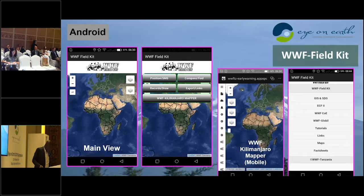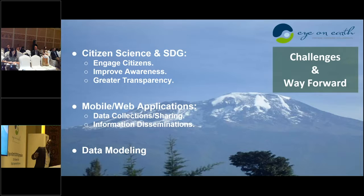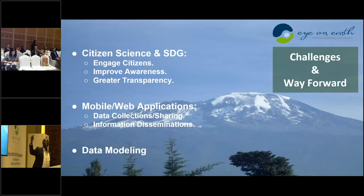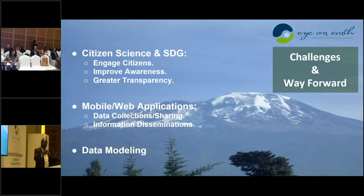A challenge: citizen science and SDG — engaging citizens, improving awareness, and greater transparency. This was addressed by people from EZRI, saying you can do the SDG thing. Right now we are doing water quality and sea observation, and we want to use satellite to support this. There is also mobile and web application data collection and sharing — we want to disseminate information. Most communities collecting data ask how it can be shared back. What you create, you should give back to the society — a simple graph showing the trend is all they want. Lastly, data modeling — looking at tools like Eye on Earth to create outputs for local communities.